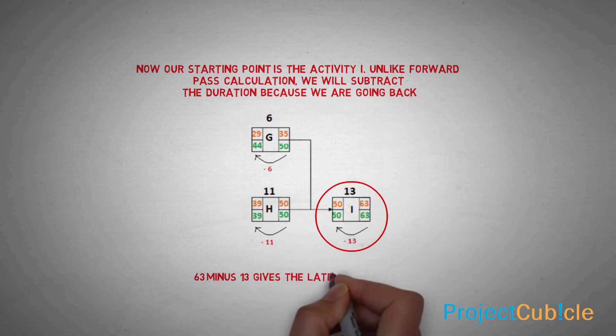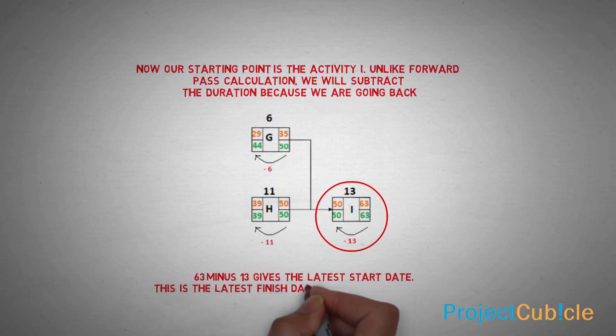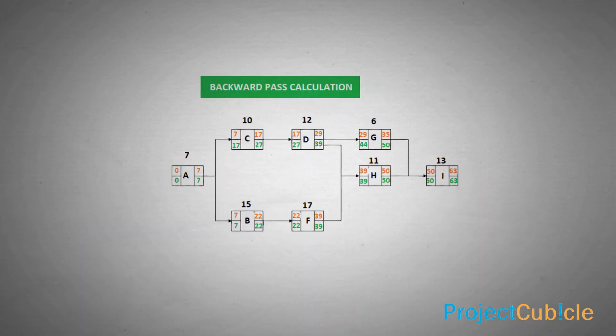63 minus 13 gives the latest start date. This is the latest finish date of both activity H and G. After completing all the latest date calculations, we will have that figure.